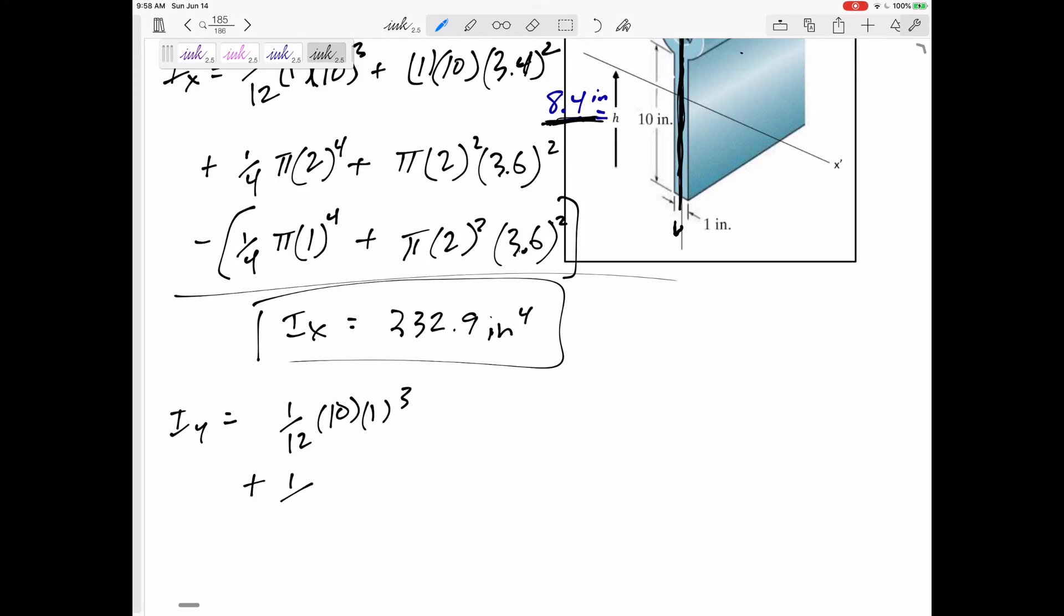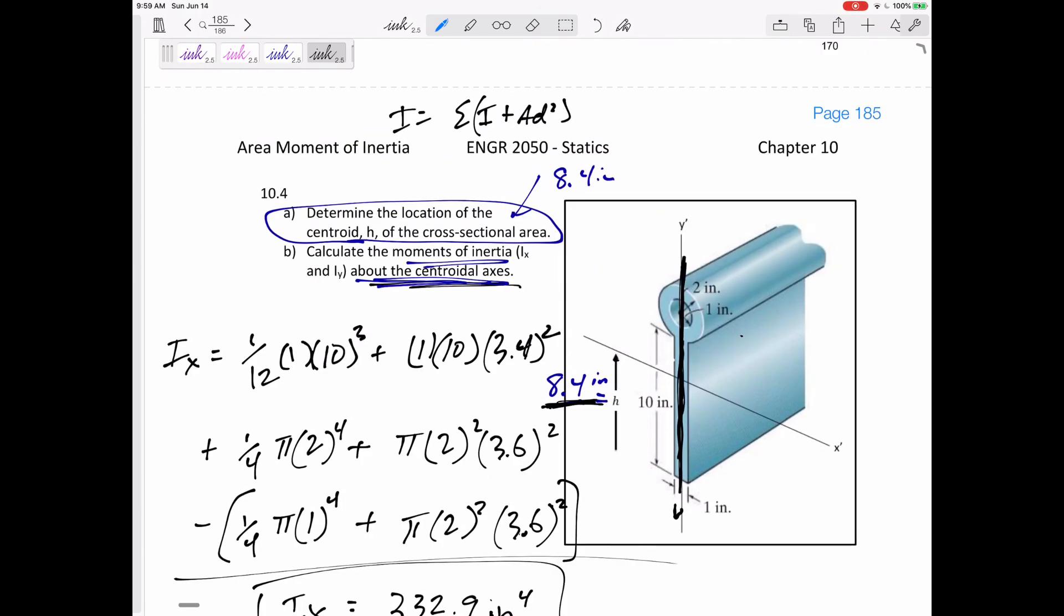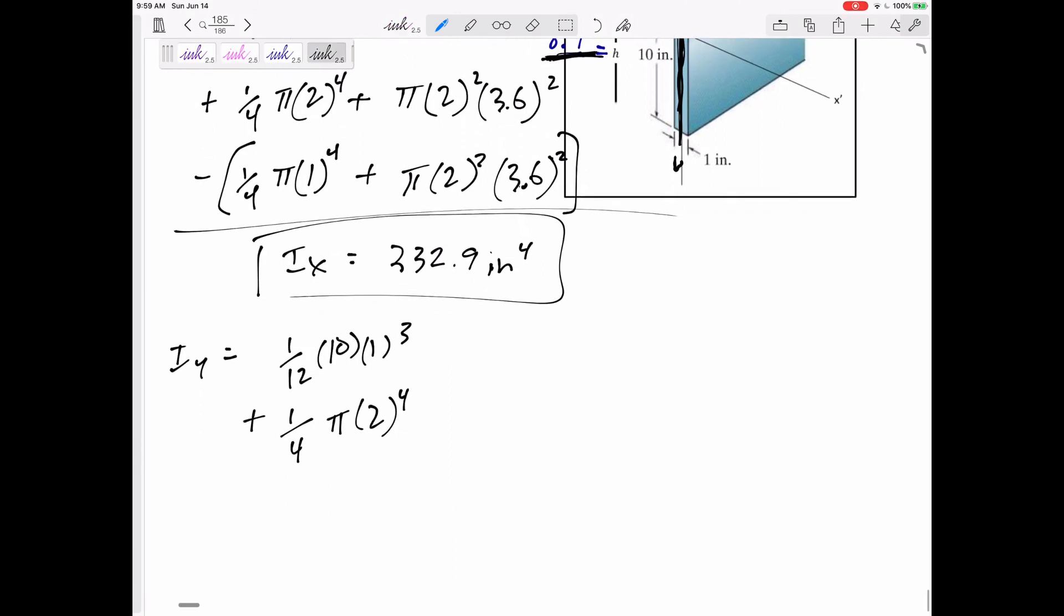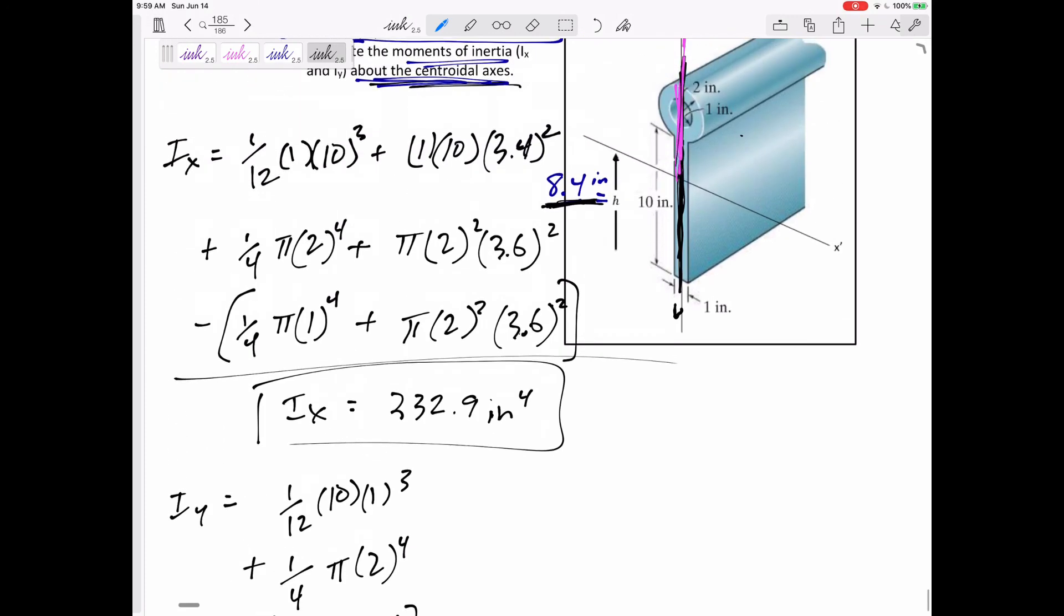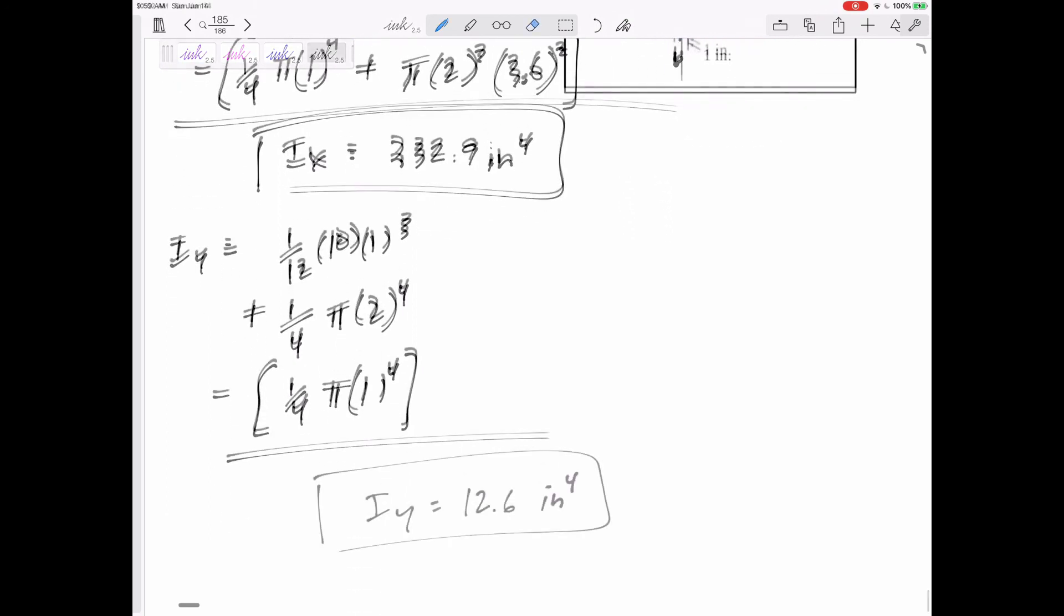All right, for the large circle, 1/4 pi r to the 4th. That is down the middle of this large circle, which is the same axis. I don't have to add an AD squared. Then I'm subtracting 1/4 pi r to the 4th. And again, I don't need to move this Y axis anywhere. Add those together.